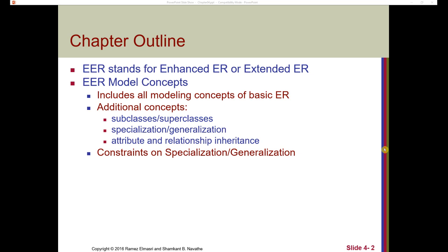Some different concepts that we'll talk about: we'll include all the modeling concepts from chapter three, as well as the idea of subclass, superclass, specialization, and generalization, the concept of inheritance for both attributes and relationships, and then talk about some constraints on specialization and generalization.